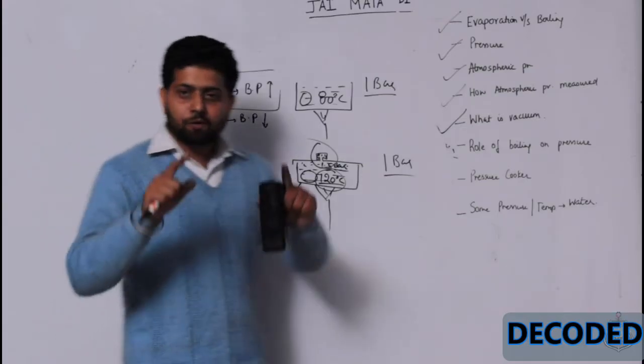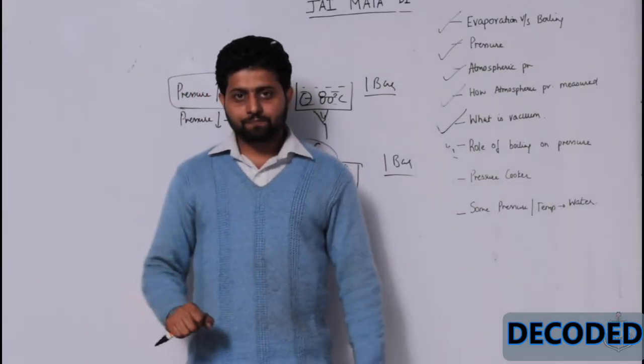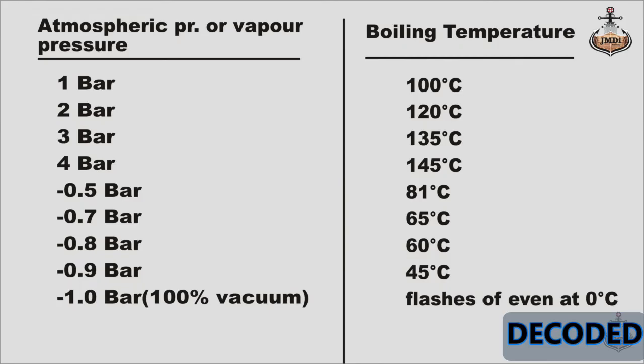So now, you have got a chart in front of you. You can see on the slide. At 1 bar atmospheric pressure, boiling temperature is 100 degree centigrade. At 2 bar, it is 120 degree centigrade. At 3 bar, approximately 135 degree centigrade. At 4 bar, approximately 145 degree centigrade temperature.